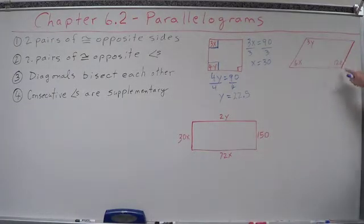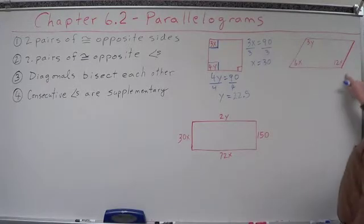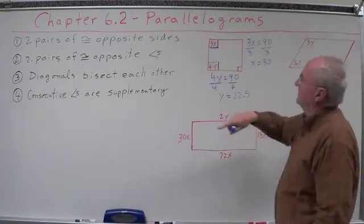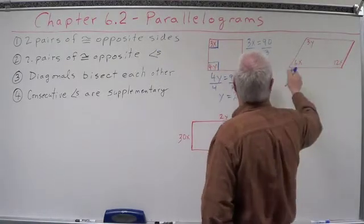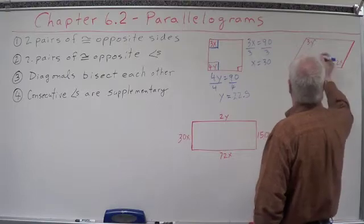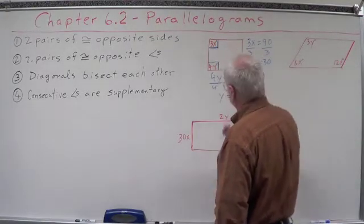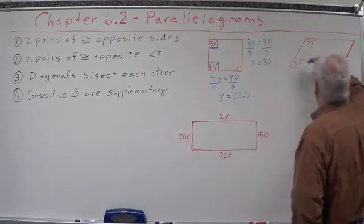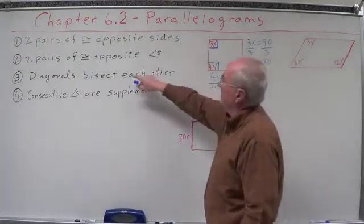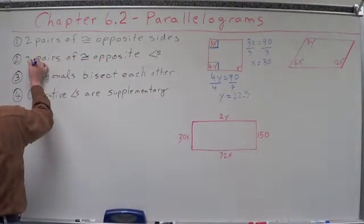Now, over here, we're given another parallelogram. Let's look at the rules. What do we got? We got x's on consecutive angles. Pairs of opposite sides, we don't have opposite sides. We got angles. Put little degree marks on there so we know they're angles. Same thing with these. Those are angles. We got angles. What can we use? Two pairs of opposite congruent angles.